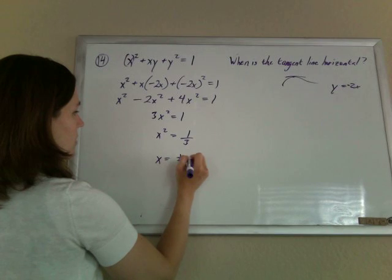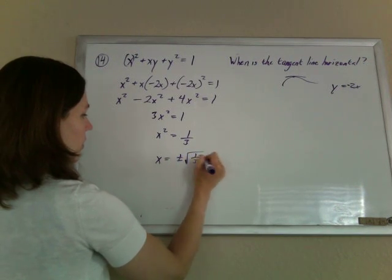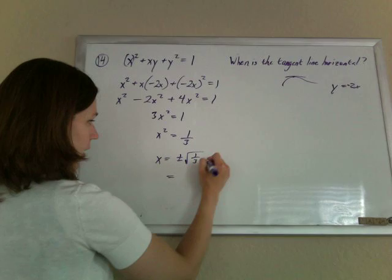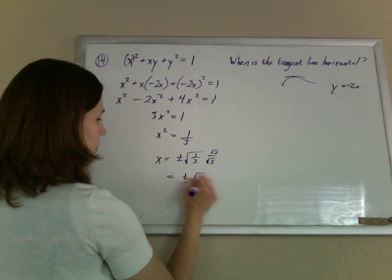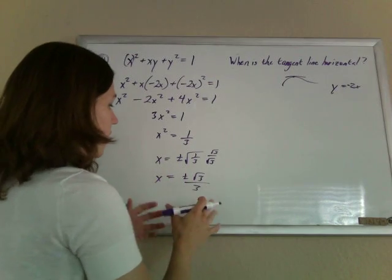So x is plus or minus the square root of 1/3. So rationalize root 3 over 3. Plus or minus root 3 over 3. Those are the values of x.